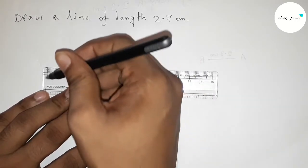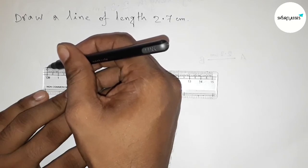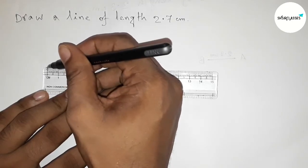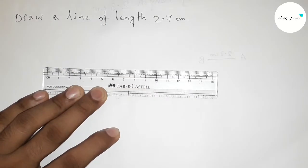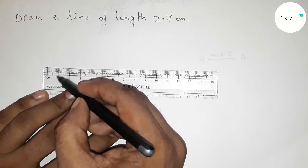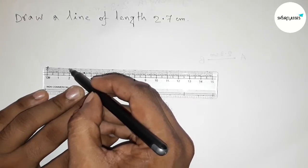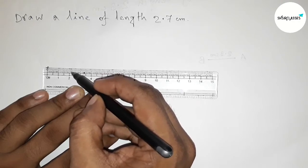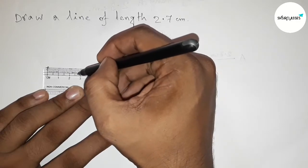So first this is the starting here zero, so first marking this. So this is starting zero. Now counting the length, so from zero this is one centimeter, and this is two centimeter, and this is 2.1, 2, 3, 4, 5, 6, 7. So this is 2.7 centimeter length.